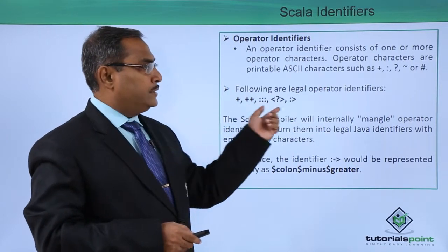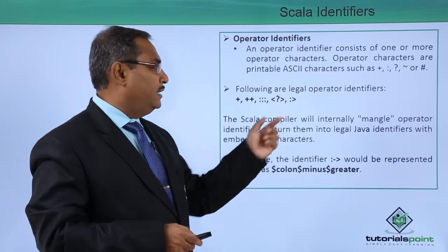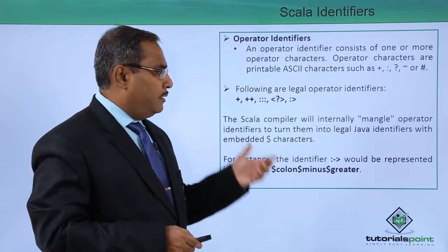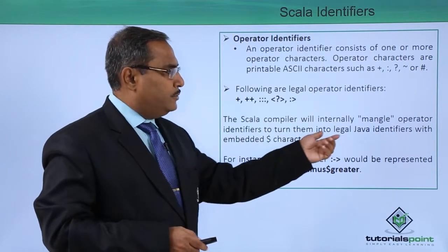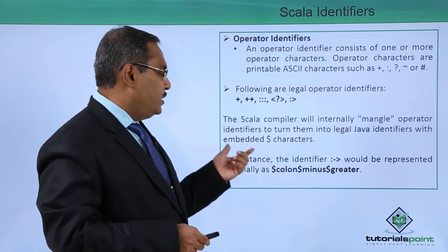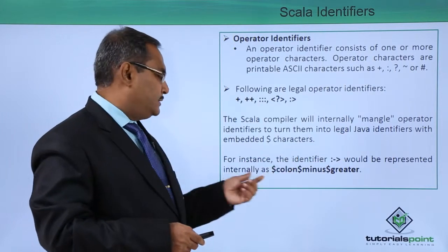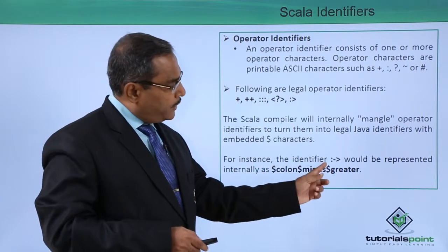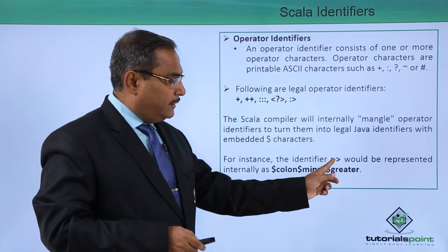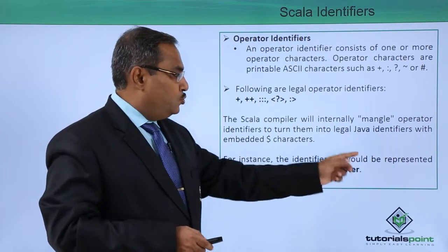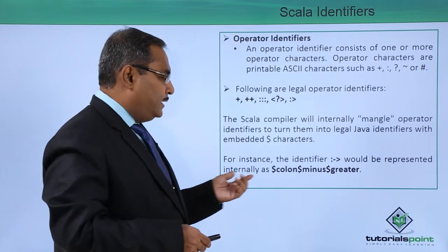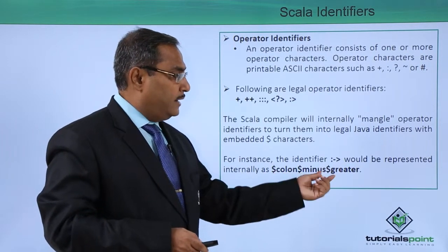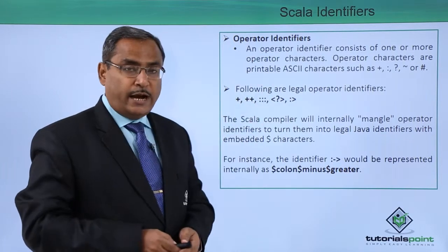The following are legal operator identifiers. The Scala compiler will internally mangle operator identifiers to turn them into legal Java identifiers with embedded dollar characters. For instance, the identifier colon-minus-greater-than ( :-> ) would be represented internally as dollar-colon, dollar-minus, and dollar-greater.